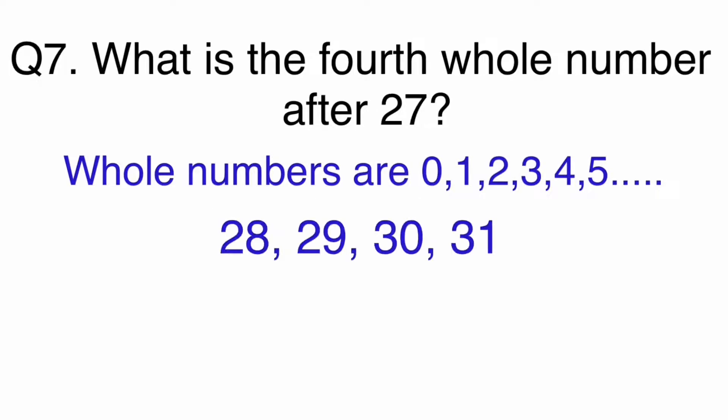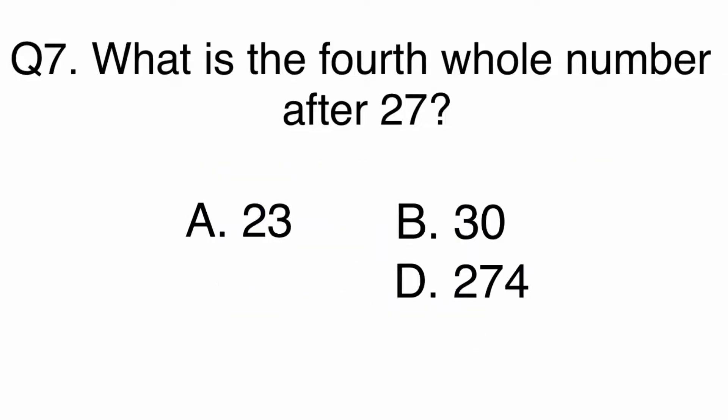Whole numbers are 0, 1, 2, 3, 4, 5, etc. If you add 27 and 4 together you can get the answer. The answer is C. 31.